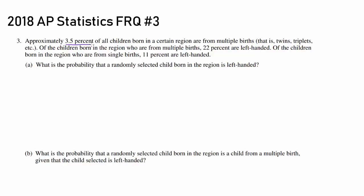Approximately 3.5% of all children born in a certain region are from multiple births — that is, twins, triplets, etc. Of the children born into the region who are from multiple births, 22% are left-handed. And of the children born in the region who are from single births, 11% are left-handed.